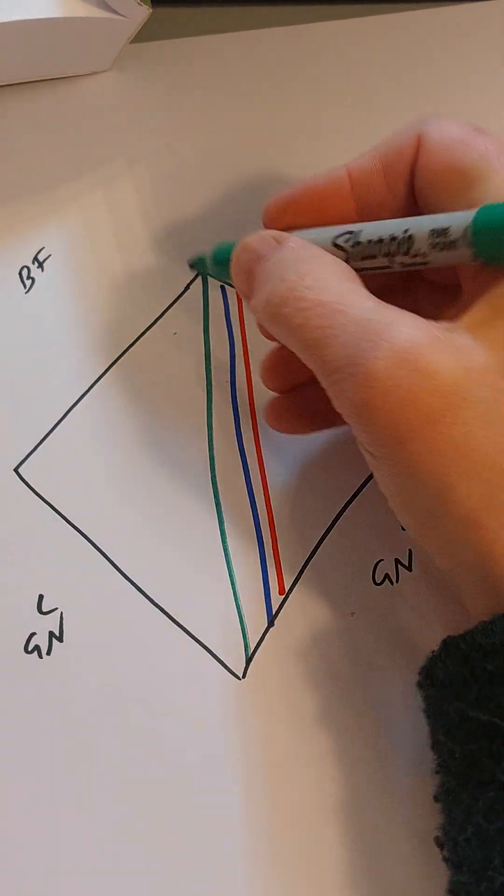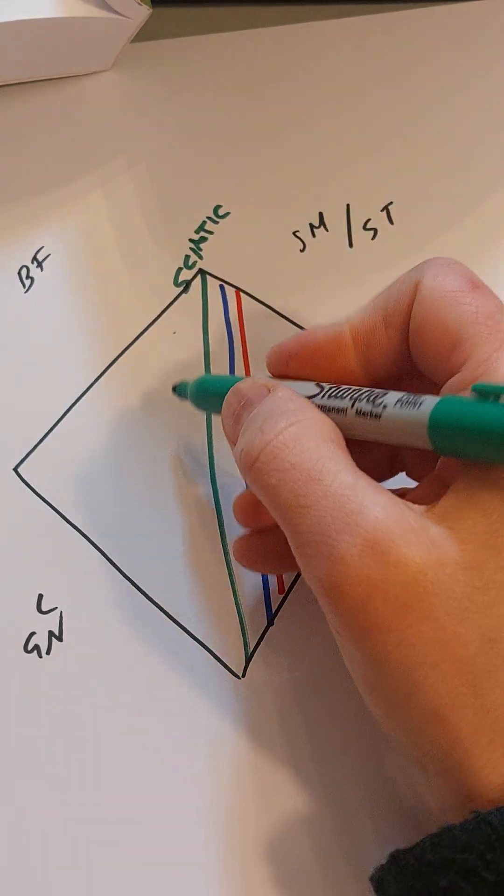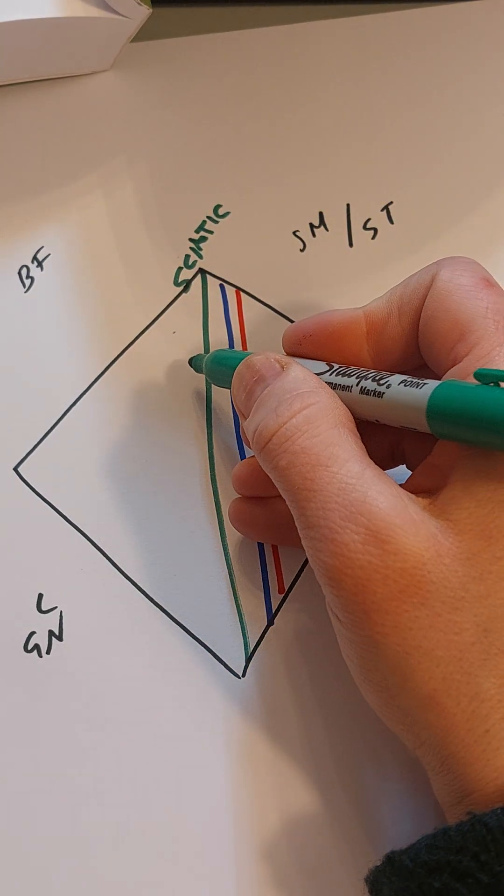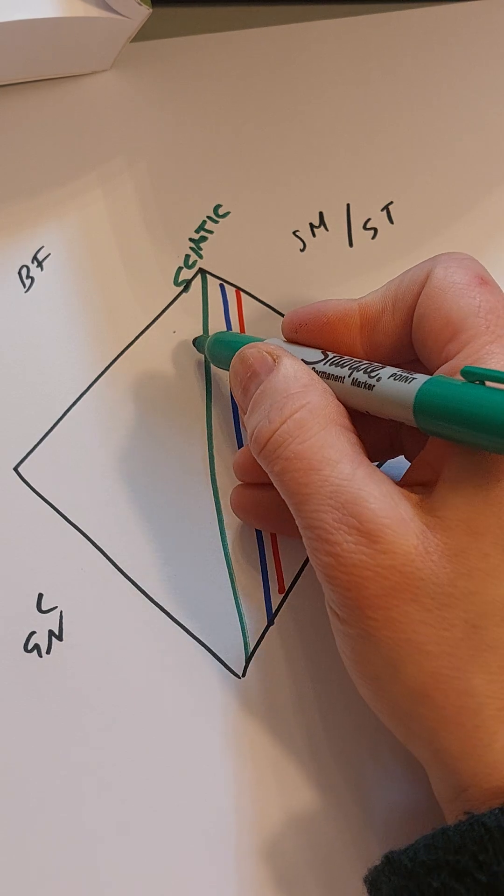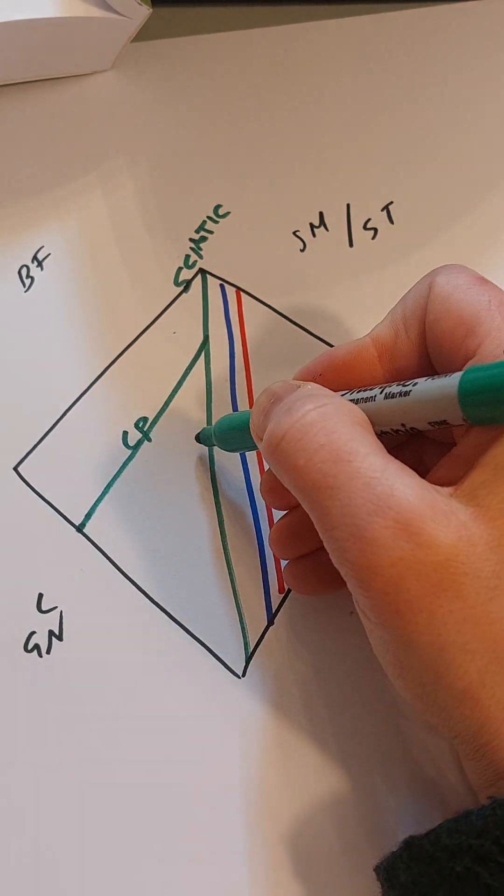So I draw one line down the middle and it starts off as a sciatic nerve. The sciatic divides somewhere normally above the popliteal fossa, but it can be within the popliteal fossa, and it's split into common peroneal and the tibial.